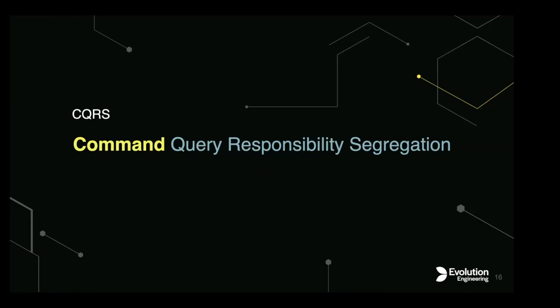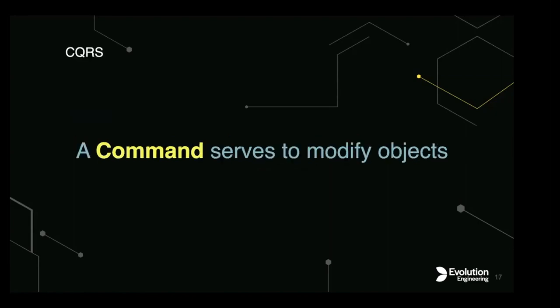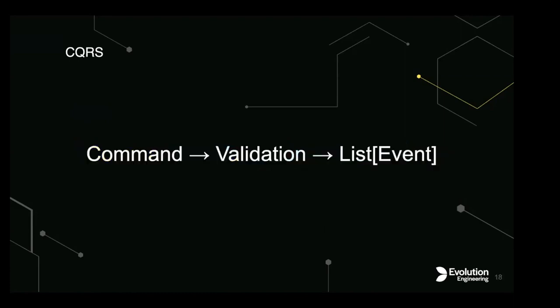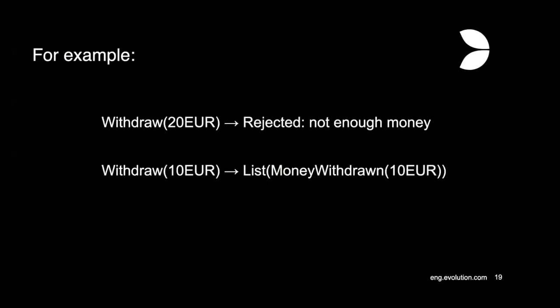Event sourcing is often paired with the CQRS concept — Command and Query Responsibility Segregation. A command is basically a user's intent to modify something in the application. Commands follow a flow: we send a command to our backend, do validation against current state, and either reject it or generate a list of events that will be stored to our event store. For example, if we try to withdraw money from a bank account it can be rejected due to insufficient funds, or if validation succeeds we generate and store a list of events — in this case, a 'MoneyWithdrawn' event.